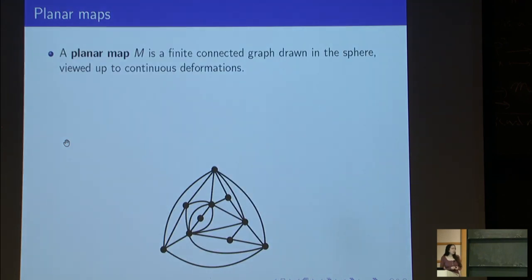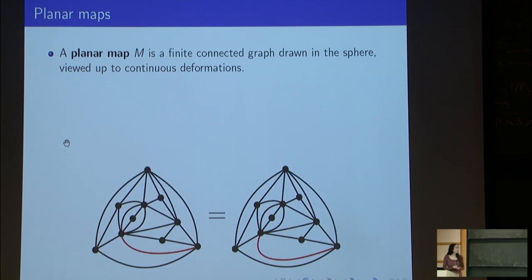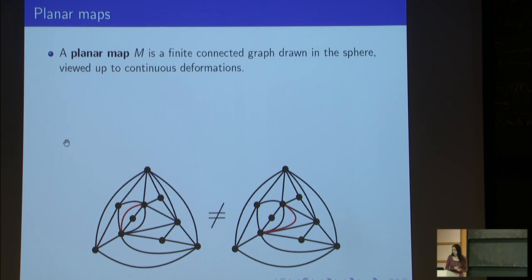A planar map is a graph drawn on the sphere, viewed modulo continuous deformations. For example, two planar maps are considered to be the same if we can get from one to the other by continuously deforming an edge. Two planar maps are not considered the same if the deformation required is not continuous.